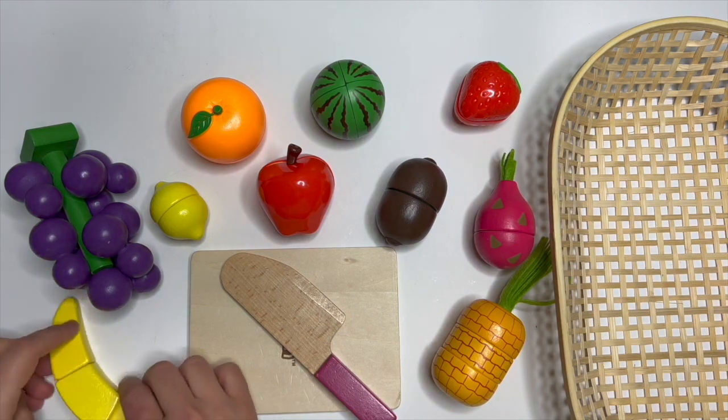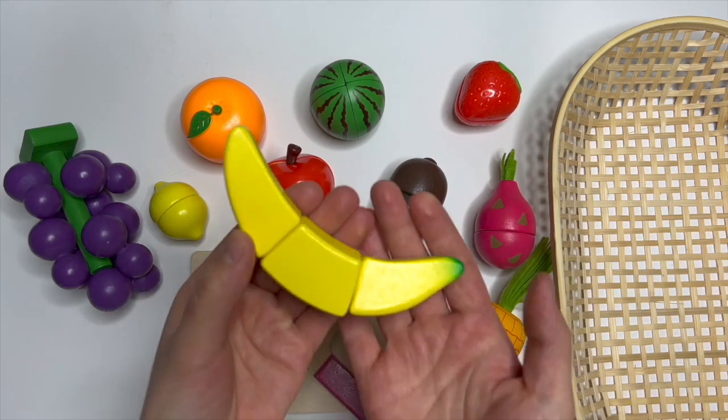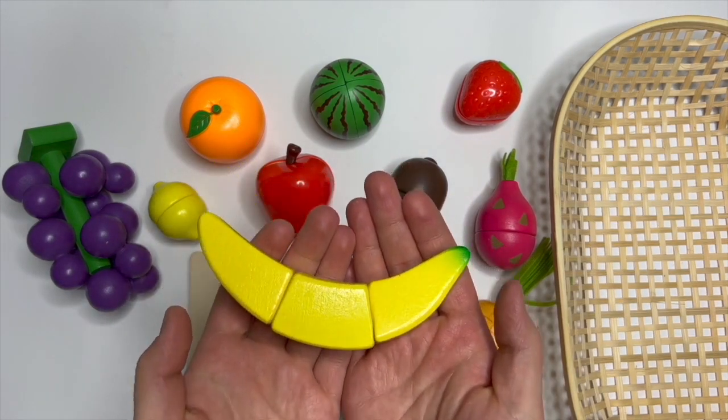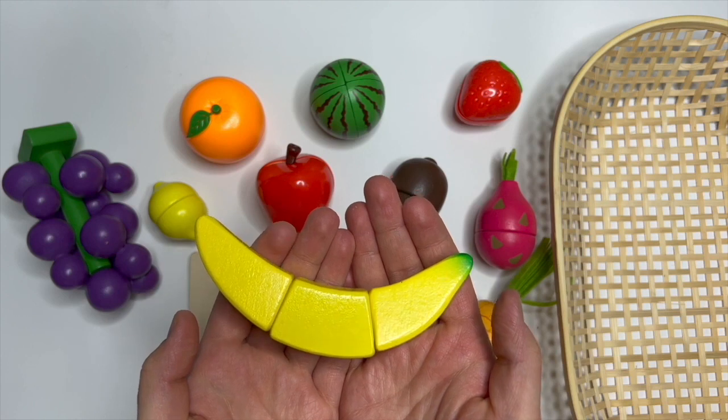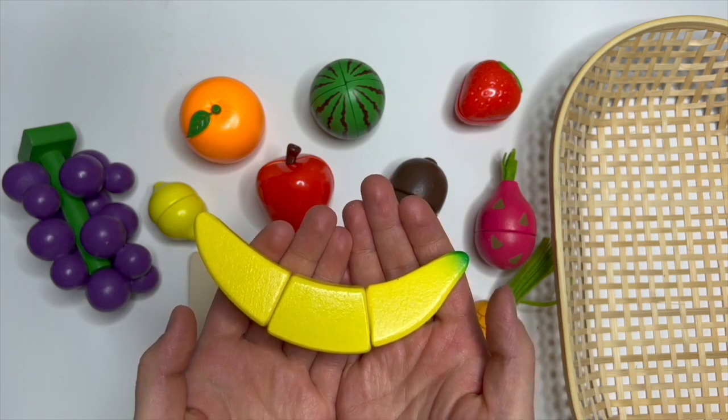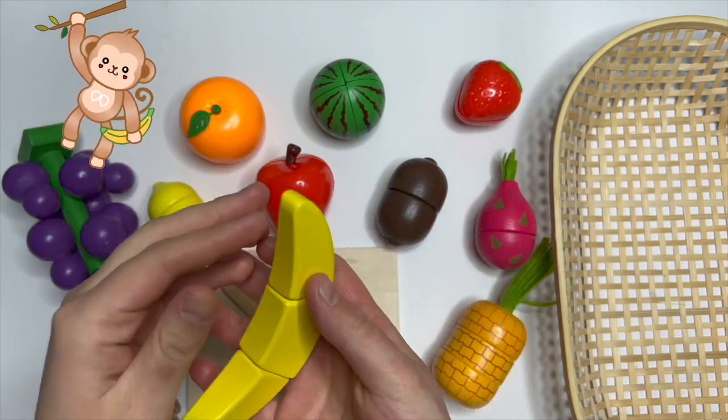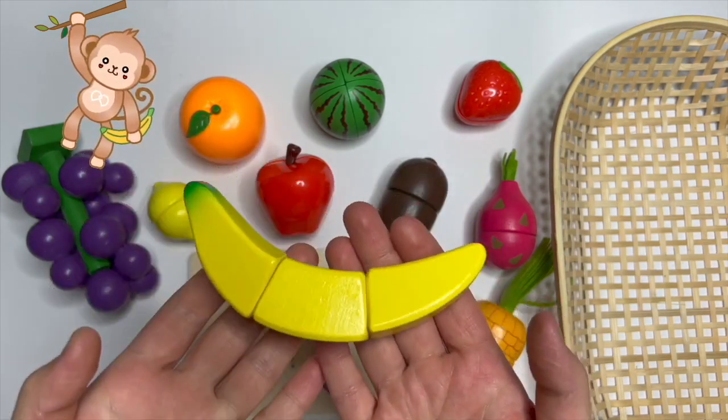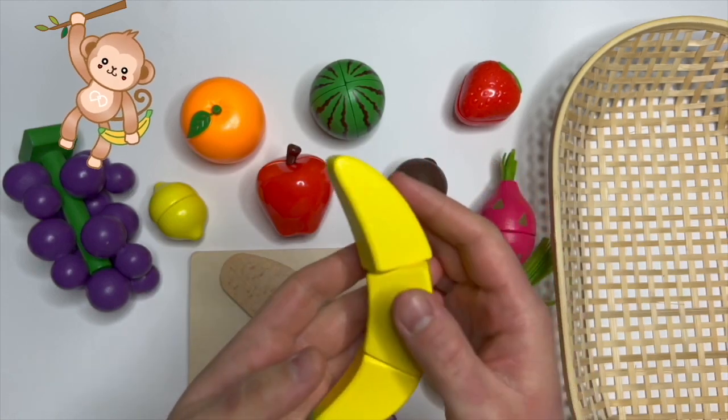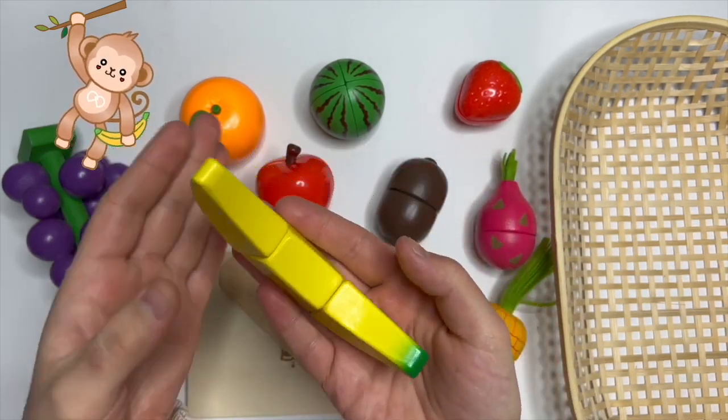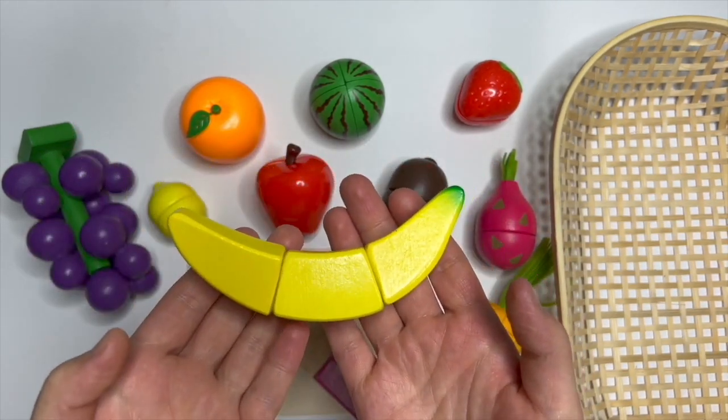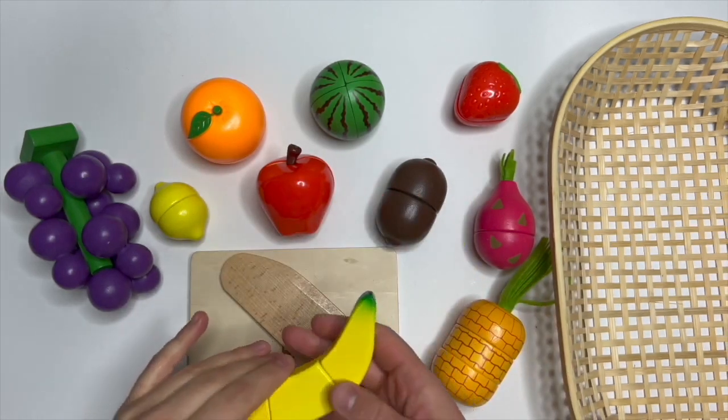Our first fruit is a yellow banana. I love bananas, but do you know who else loves bananas the most? Yeah, you are right. Monkeys. Monkeys love bananas. They eat them every day. Bananas are very good because they give us a lot of energy. Let's cut our banana.